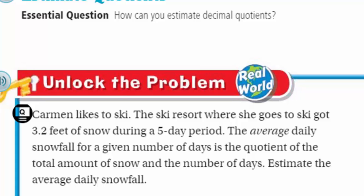There's a lot here in this problem. They put the word average in italics - this must be significant. We need to understand what average means. It says that the average daily snowfall for a given number of days is the quotient, which we know is the answer of a division problem. The total amount of snow is our dividend, 3.2 feet of snow, and the number of days, the five day period, is what the average is. So we got all this snow during this period of time - if we divide that, that's going to give us the average daily snowfall.